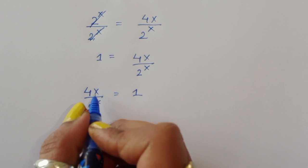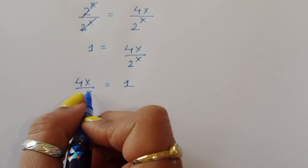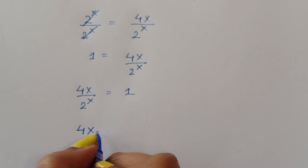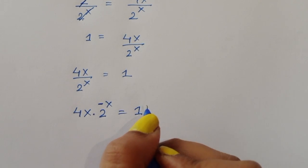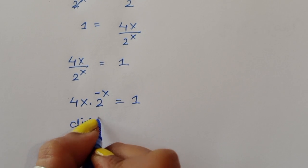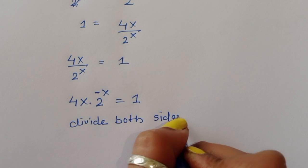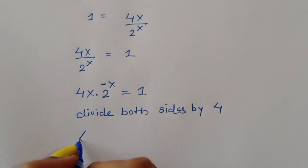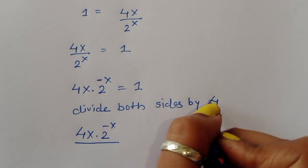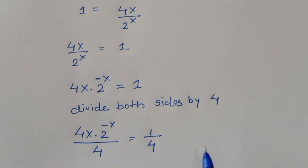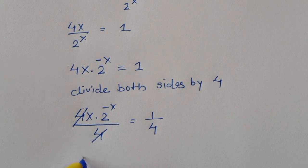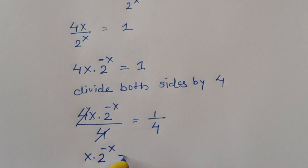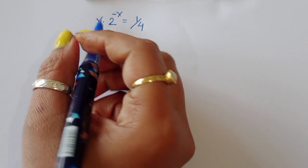Now 4x divided by 2 power x is equal to 1. We can write this in multiplication form: 4x times 2 power minus x is equal to 1. Divide both sides by 4, so x times 2 power minus x equals 1 upon 4. Now multiply both sides by minus 1.